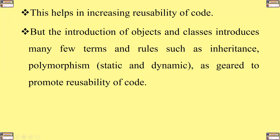The introduction of objects and classes in object-oriented programming — which in C or structured programming we refer to as variables and structs respectively — introduces terms such as inheritance and polymorphism, whose main purpose is to promote the reusability of the code.